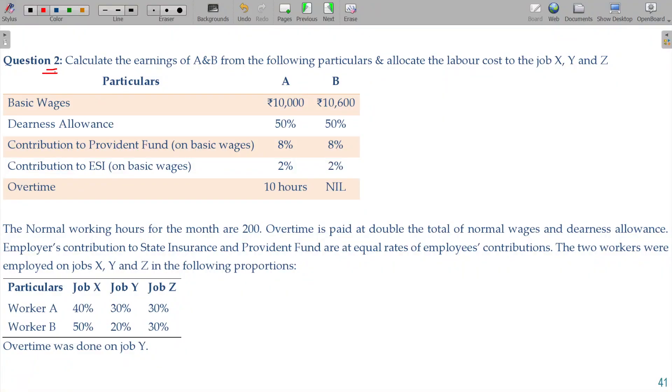Question No. 2. Calculate the earnings of A and B from the following particulars and allocate the labour cost to job X, Y and Z. We are not in need of take home pay. We need only CTC.